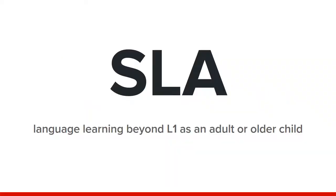SLA stands for second language acquisition, and it generally describes language learning beyond someone's first language when they are an adult or an older child. This distinction is made between learning a language as a very young child — whether it's your first, second, or third language — that experience tends to be very similar to first language learning. Second language acquisition is described as learning as an older child or adult, when we already have a good grasp of a language system.